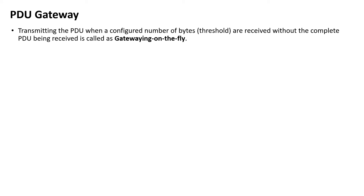Now let's discuss gatewaying on the fly. Transmitting the PDU when a configured number of bytes are received — without the complete PDU being received — is called gatewaying on the fly. Only one destination module can be configured in this case. Buffers are available in PDUR for TP gatewaying. The transfer of TP data is started before the full TP data is buffered. The gateway provides a buffer to the receiving TP module which is smaller than the overall data length. When this buffer is filled, the gateway starts transmitting the data on the destination bus.